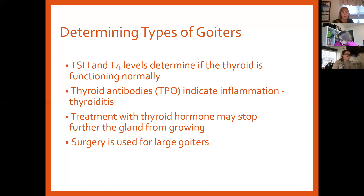Treatment with thyroid hormone may stop the gland from growing. If the gland is overworking because it doesn't have enough and keeps stimulating and growing, giving a certain dose of thyroid hormone might suppress that activity so the goiter doesn't keep growing. Surgery is considered if you have a really large goiter that will obstruct the airway, compress it, or make it hard to swallow — if it's really big and boggy they may take it out.